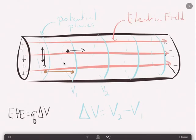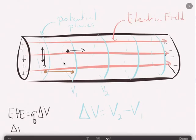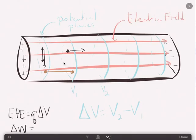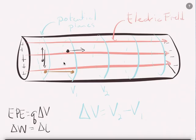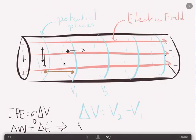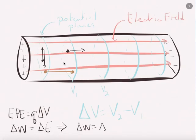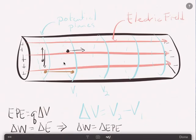If you remember from the work energy theorem, we had delta W equals to the change in energy. This implies that delta W is just going to equal to delta EPE, which is just the change in charge over the change in potential. And hopefully, the change in potential doesn't change, because if that is the case, we would have to do more of it. That's the assumption that we're making.